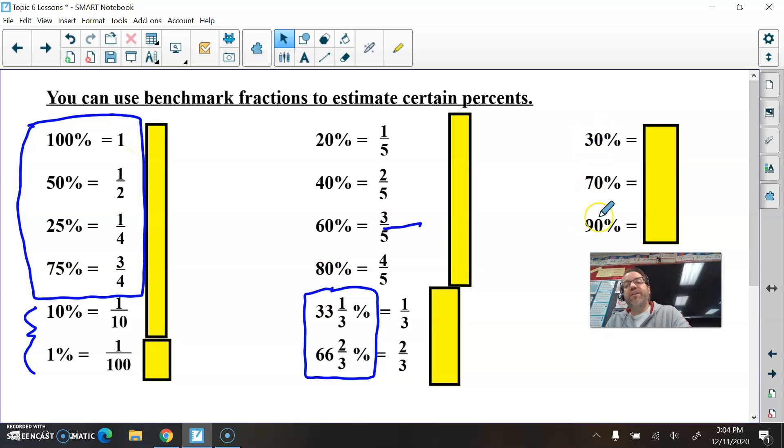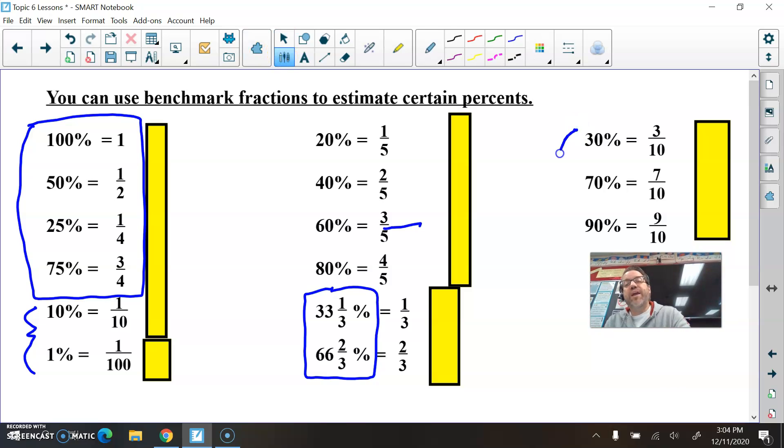Now for the 30, 70, and 90%, there you're looking at three tenths, seven tenths, and nine tenths. If you don't memorize these, that's probably okay. But they are very nice to know. These probably would be good to know. Okay, the 20, 40, 60, and 80%. One fifth, two fifths, three fifths, and four fifths.